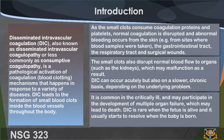Abnormal bleeding occurs from the skin, for example from sites where blood samples were taken, the gastrointestinal tract, the respiratory tract, and surgical wounds. The small clots also disrupt normal blood flow to organs such as the kidneys, which may malfunction as a result. DIC can occur acutely but also on a slower, chronic basis depending on the underlying problem. It is common in the critically ill and may participate in the development of multiple organ failure, which may lead to death. DIC is rare when the fetus is alive and usually starts to resolve when the baby is born.